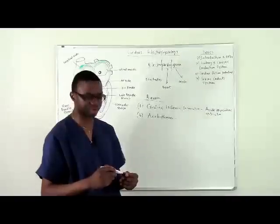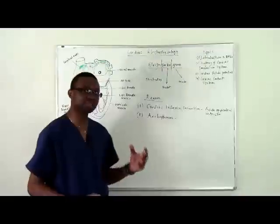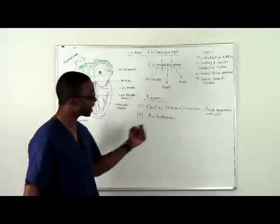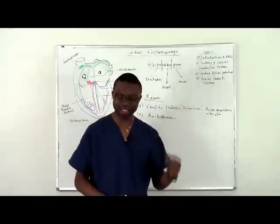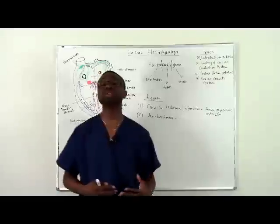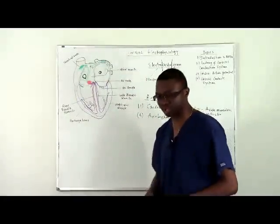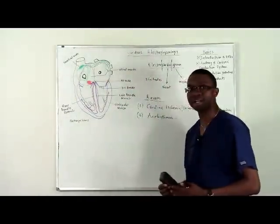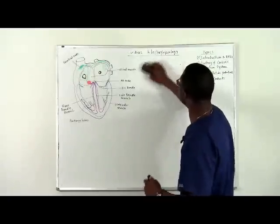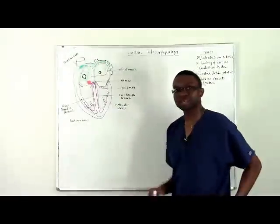The EKG is also extremely useful to tell us if there's a problem in the wiring system of the heart — we call those arrhythmias. We're going to talk about different kinds of arrhythmias later on, but right now I want you to realize that the EKG gives us a lot of information about how the heart is functioning. Now that we know what an EKG is and what we use it for, let's progress to learning the structures of the heart involved in this.